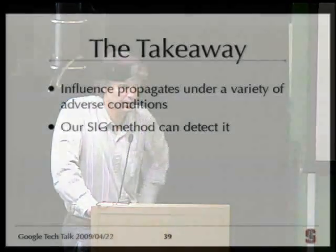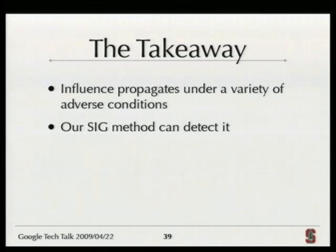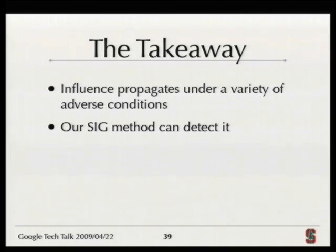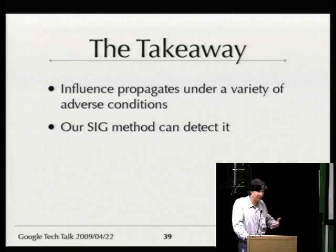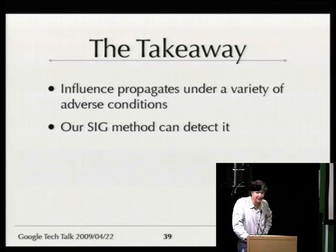The point of these experiments is to show that influence is a robust notion. Even when there's a lot of noise, imprecision in the data, or a very complicated system, there's still detectable influence. This suggests the technique should be useful in real systems — there's no simple way to defeat it, and some signal will remain even if you have all these other problems simultaneously.